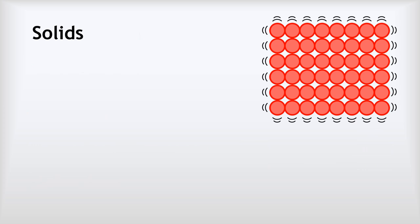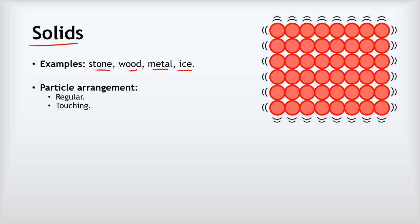Let's start off by looking at solids — for example things like stone, wood, metal, and ice. In a solid, the arrangement of particles is regular. You can see the particles arranged in neat regular rows; in three dimensions it would be layers. The particles are touching — there are no spaces between them.